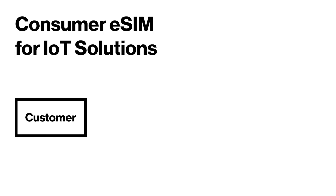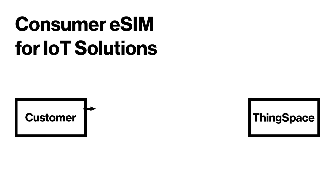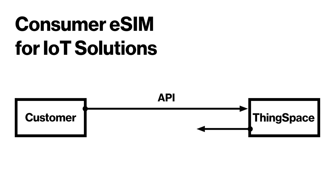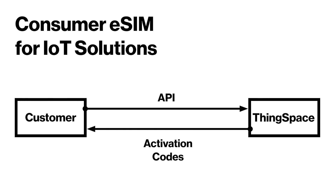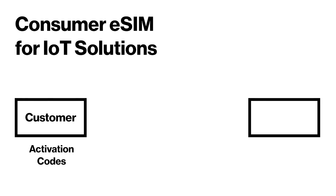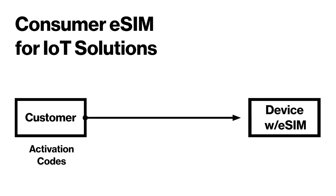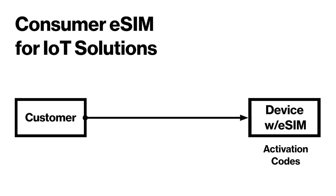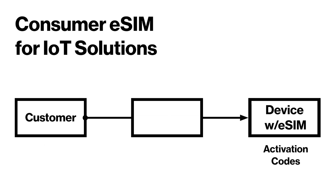Customers will call these new APIs from their activation portal and they will receive a callback which will contain the activation codes for each line of service requested. It is then up to the customer to take these activation codes and get them to their respective devices, which is typically done through a third-party mobile device manager.